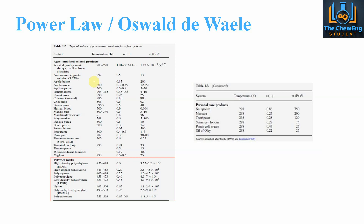This is a standard table for typical values of the power law constants, just for a few systems — there are many more tables available in the online resource library. For example, for human blood at 300 degrees Kelvin, we have an n value of 0.9 and an m value of 0.004. A value of 0.9 indicates this is a shear thinning fluid, and all fluids in this table are shear thinning fluids, so we would expect all n values to be less than 1.